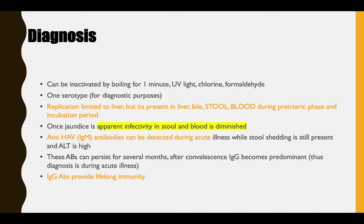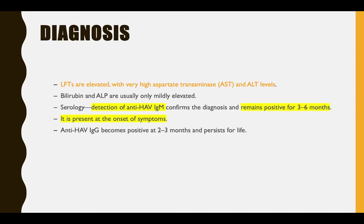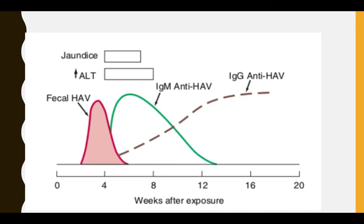We do not worry about chronic forms here. What we really care about is shedding and confirmation of the virus. Most likely the patient will come at the three-month or before the six-month mark, so you will be able to detect the anti-HAV IgM antibodies. Shedding occurs prior to symptoms, so transmission is more likely before symptoms appear.